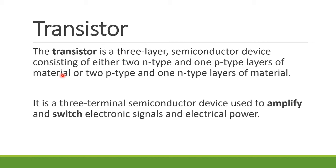As opposed to diodes, which are just two-layer devices, our transistor is a three-layer semiconductor device. It can be composed of two N-type and one P-type, or two P-type and one N-type layer of material. Its purpose is that it's a device used or a component used to amplify and switch electronic signals. The two main functions are amplify and switch.